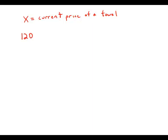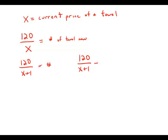So, first question, how many towels can we buy for $120? Well, that would be 120 divided by x. So that is the number of towels now. Well, we increase the price by $1. The number of towels we could buy would go down. So, in other words, the number of towels we could buy when it costs $1 more would be 10 less than this number. It would be this number minus 10.